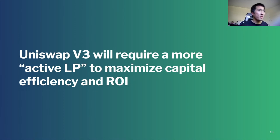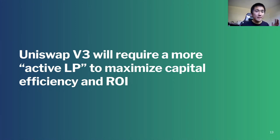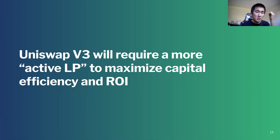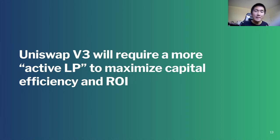V3 is going to require a more active LP strategy to maximize capital efficiency and ROI. With V2, you can just provide liquidity and be hands-off. But with V3, as the price of the asset changes — say ETH is at $2,500 — I can provide liquidity between $2,000 and $3,000. But if ETH goes to $5,000, that range is no longer generating fees, so I'll have to pull out and do a new LP between $4,000 to $6,000.